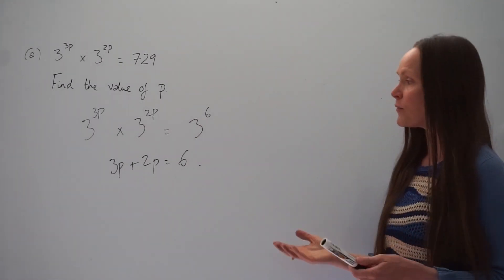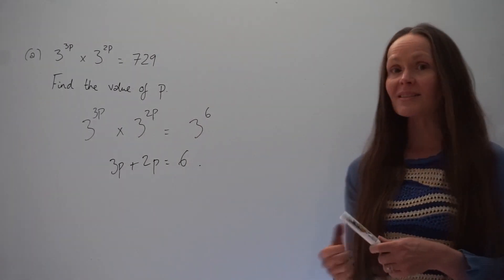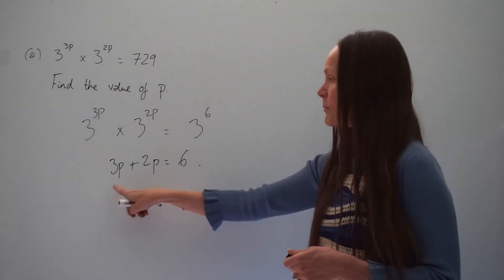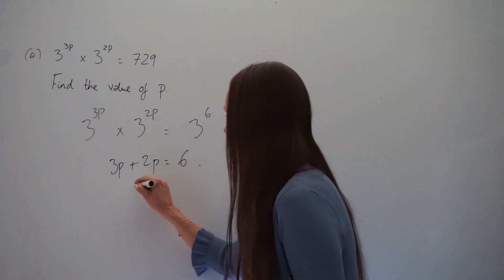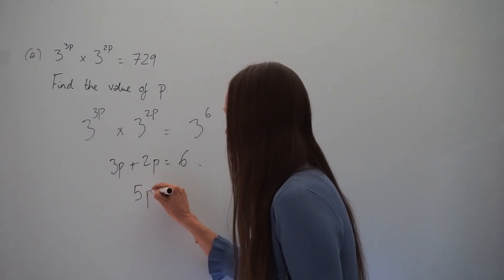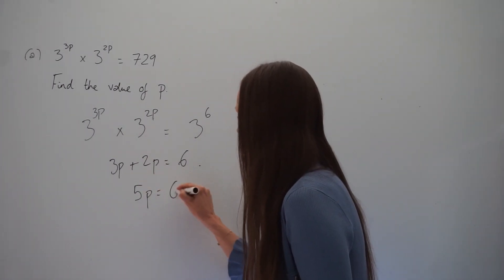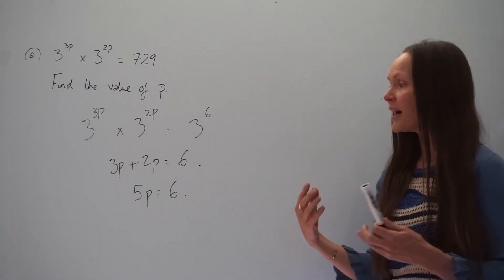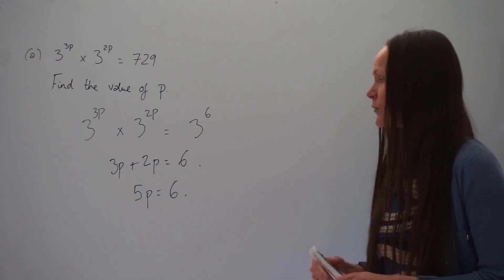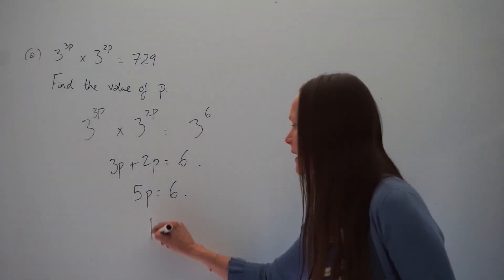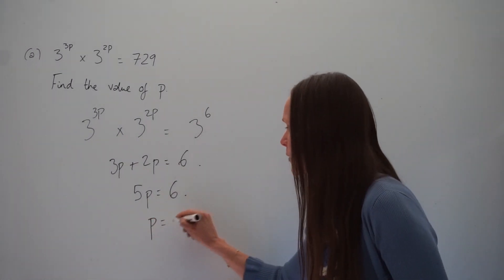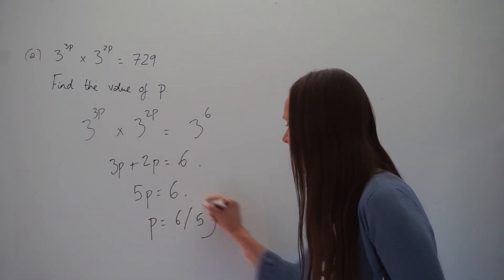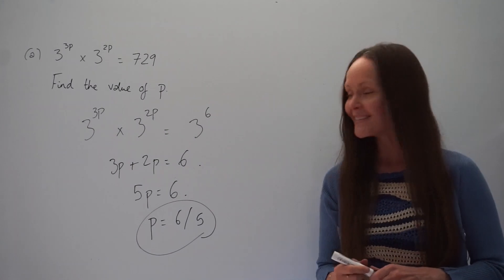If I simplify the left-hand side, 3p plus 2p is 5p. To solve for p, divide everything by 5 — so p is equal to 6 fifths. That is the value of p.